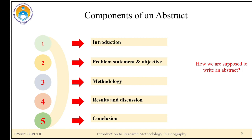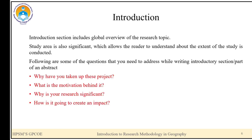These are the different components of an abstract that we are going to discuss one by one in further slides. We will also answer how we are supposed to write an abstract. The first section is the introduction. This includes a global overview of the research topic. The study area is also significant, as it allows the reader to understand the extent of where the study was conducted.